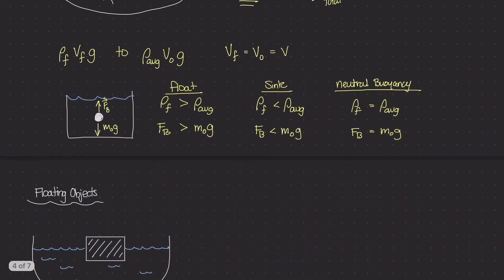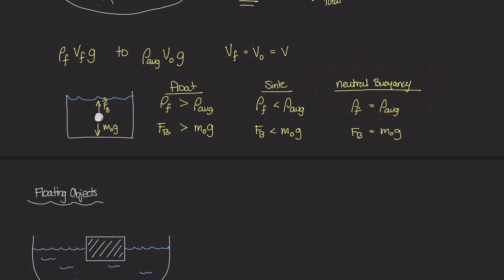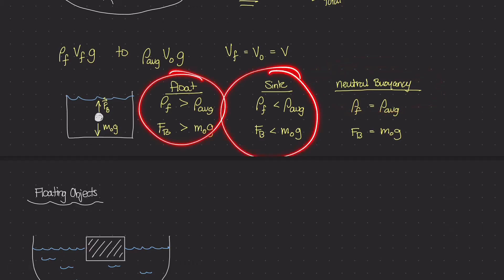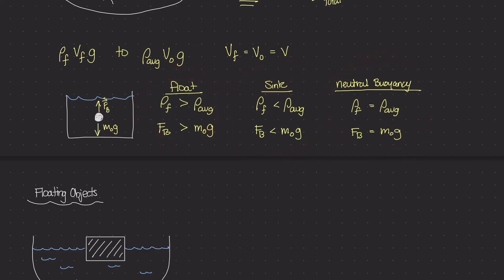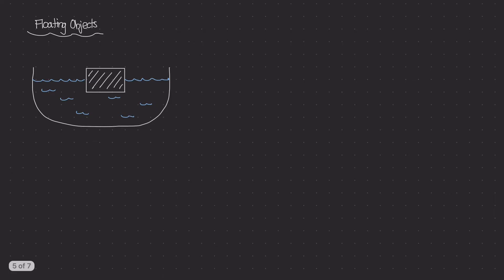Welcome back. In the last video, we were talking about this concept called neutral buoyancy, and we were studying three different cases where objects fully submerged in bodies of water would either float, sink, or stay where they're at. But I want to talk about a slightly different case in which the object we're looking at is not fully submerged inside the body of water.